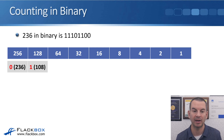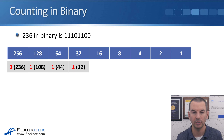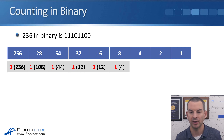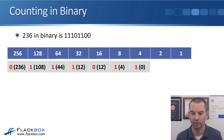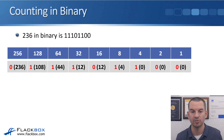Does 64 fit into 108? Yes — put down a 1, and we've got 44 left over. Does 32 fit into 44? Yes — put down a 1, and we've got 12 left over. Does 16 fit into 12? No — put a 0 and we've still got 12 left. Does 8 fit into 12? Yes — that's a 1, leaving 4. Does 4 fit into 4? Yes — put a 1, leaving 0. So the remaining two digits are both 0. That gives us 11101100 — that's 236 in binary.